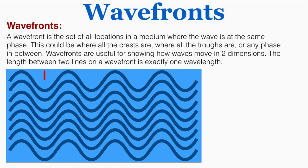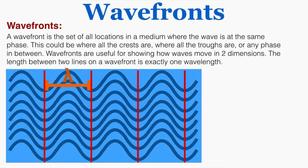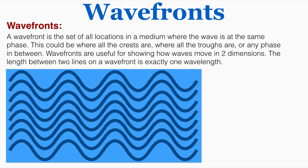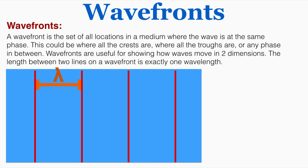We could also draw the wavefronts where the troughs of the wave appear, and in that case this would still be the wavelength — just shifted a little bit, but besides that it's the same wave. We could also draw them between the trough and the crest, and again this is the same wavelength, just shifted a little bit.